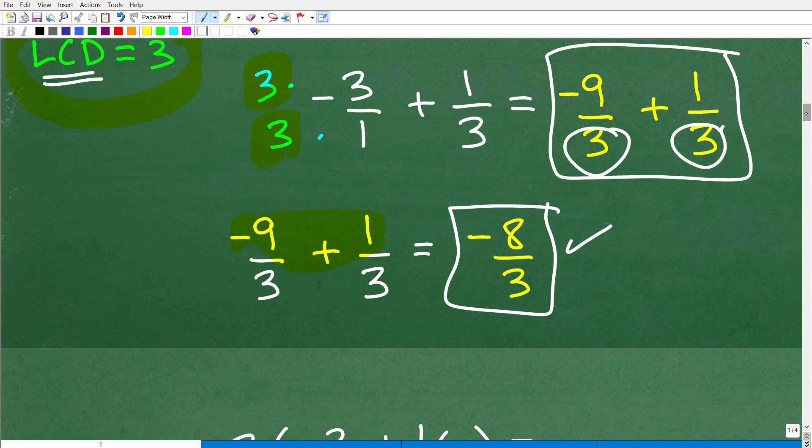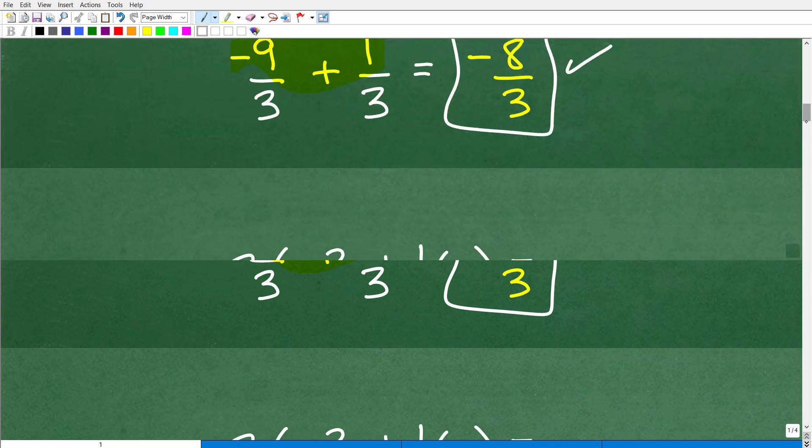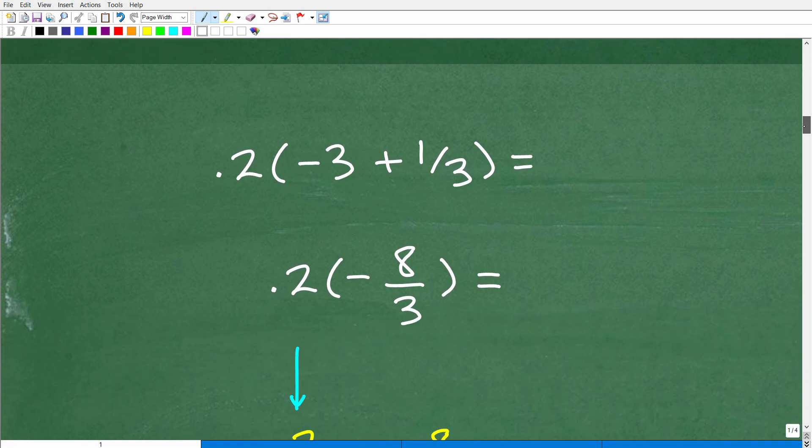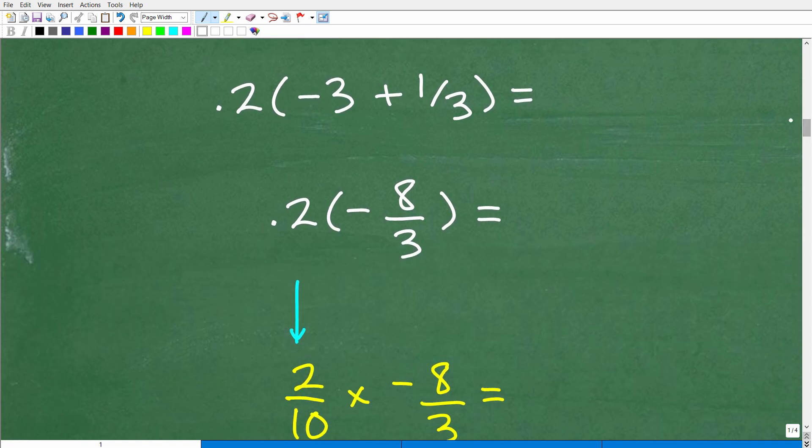Okay, so this is why you have to do things one step at a time because there's a lot of steps that we have to take. So let's just kind of review where we're at. So we did 5 minus 8, that was negative 3. Then we just did this part of the problem, negative 3 plus 1 third, and we're down to negative 8 thirds. So finally, now we have to figure out what 0.2 times negative 8 thirds is going to be.